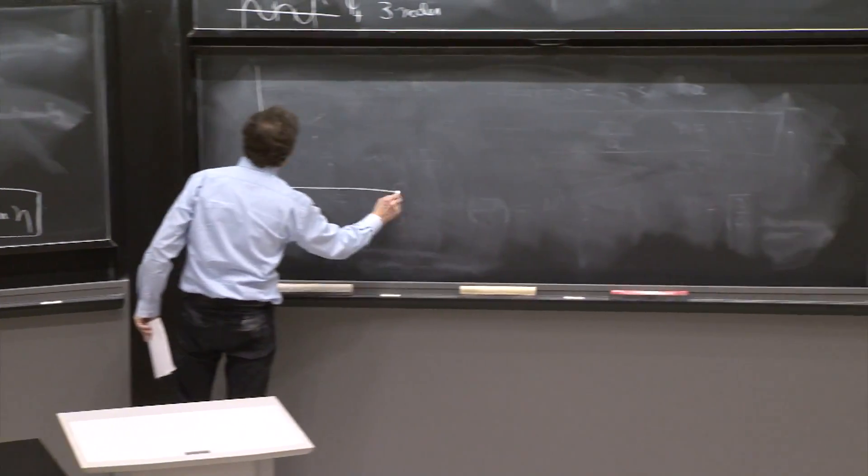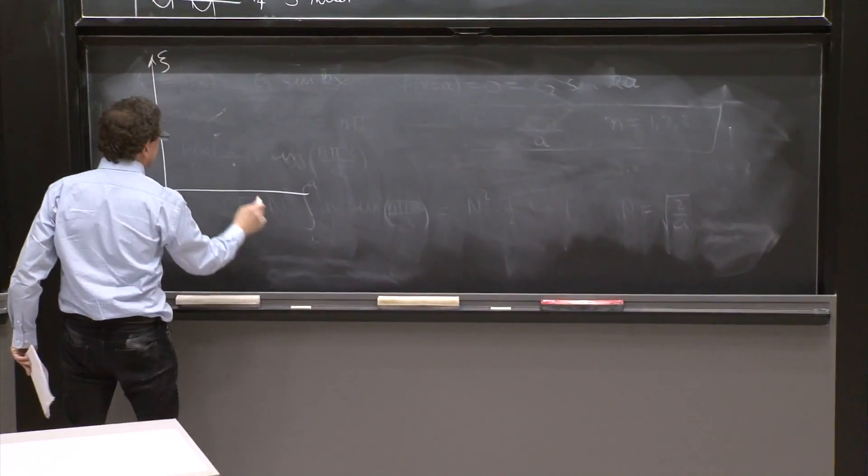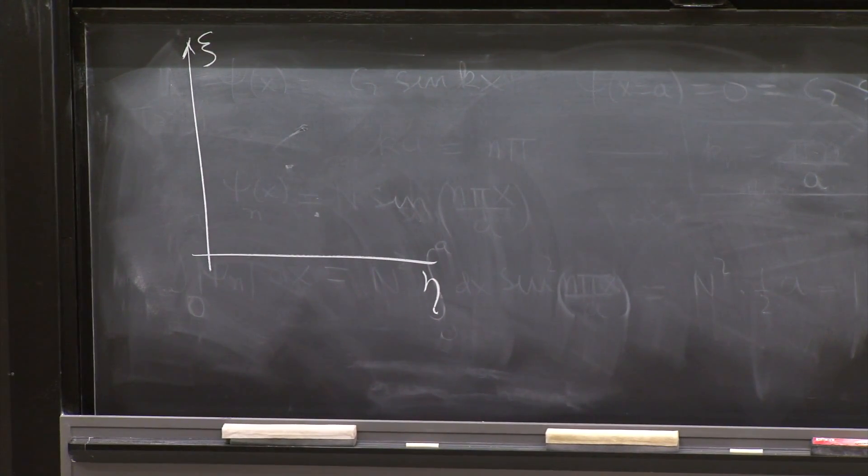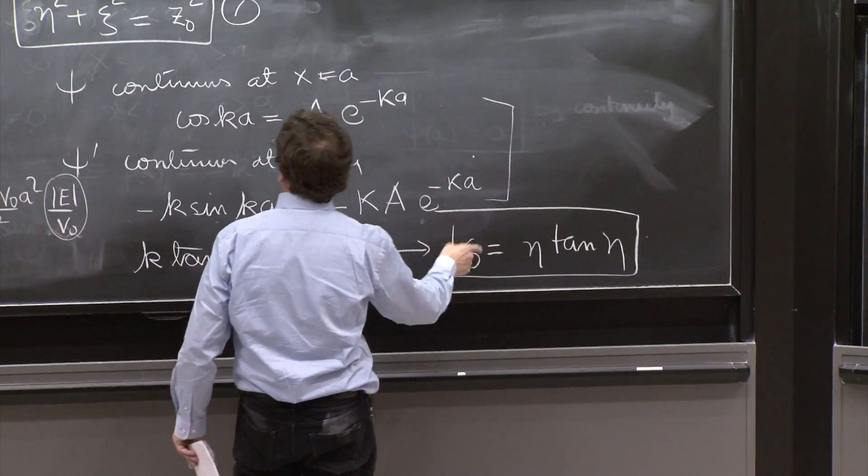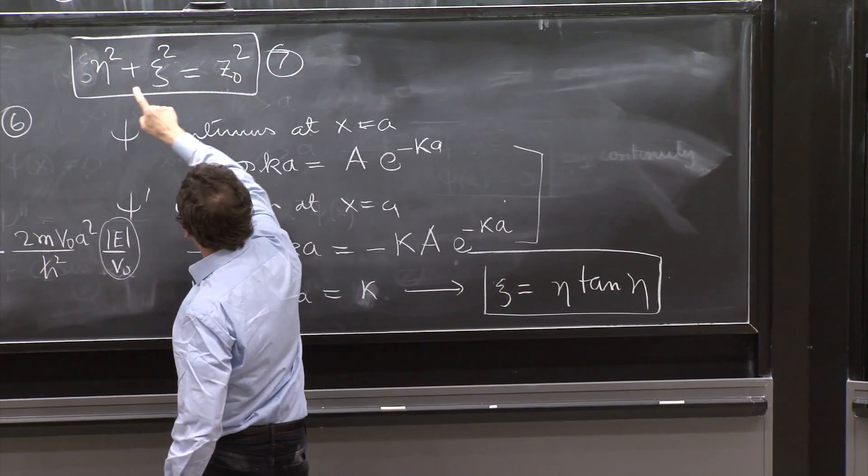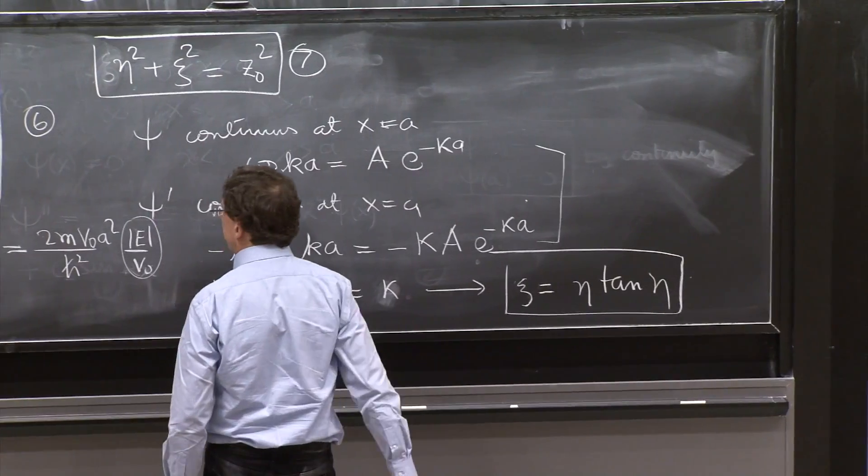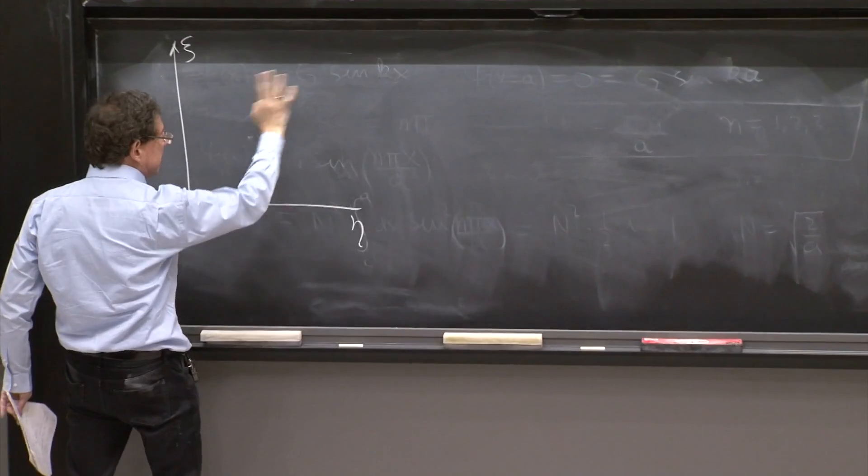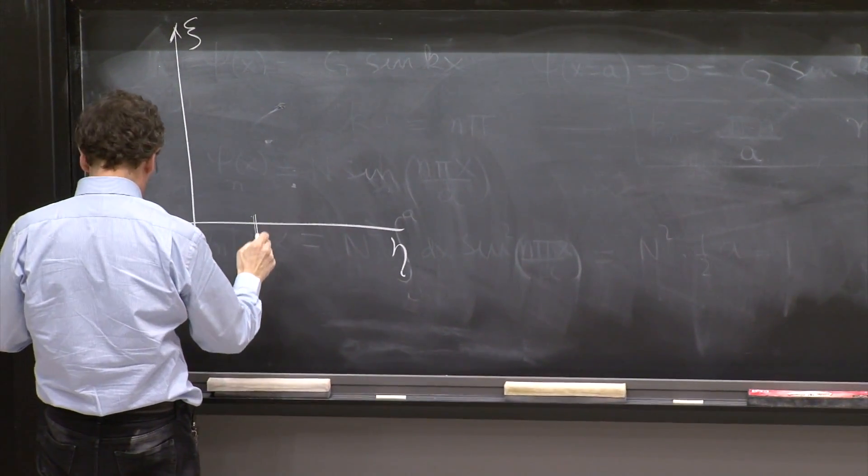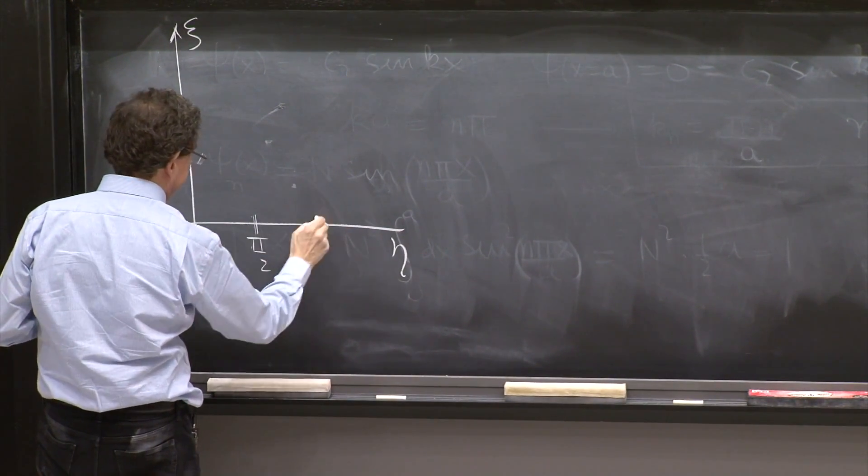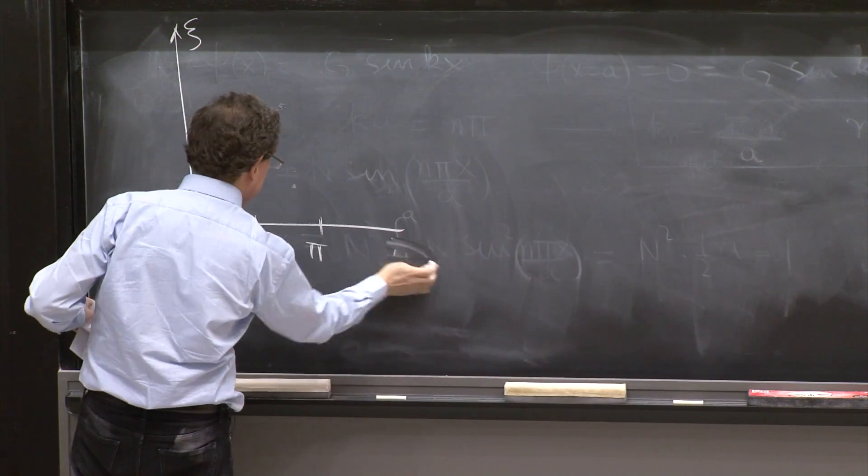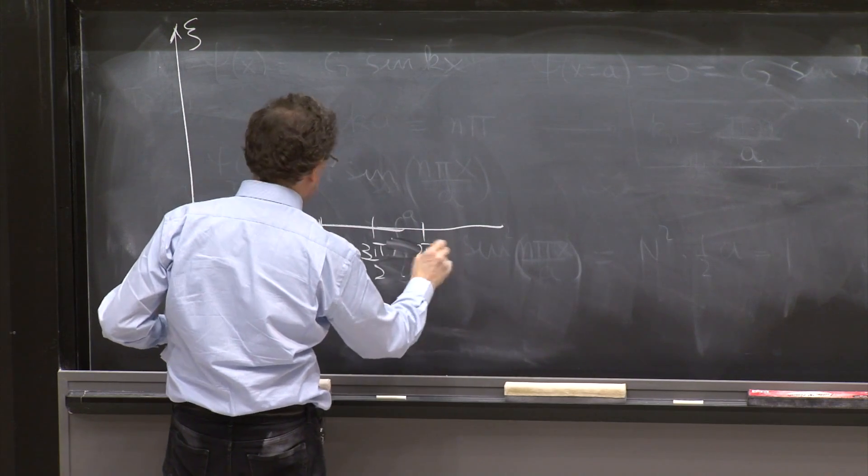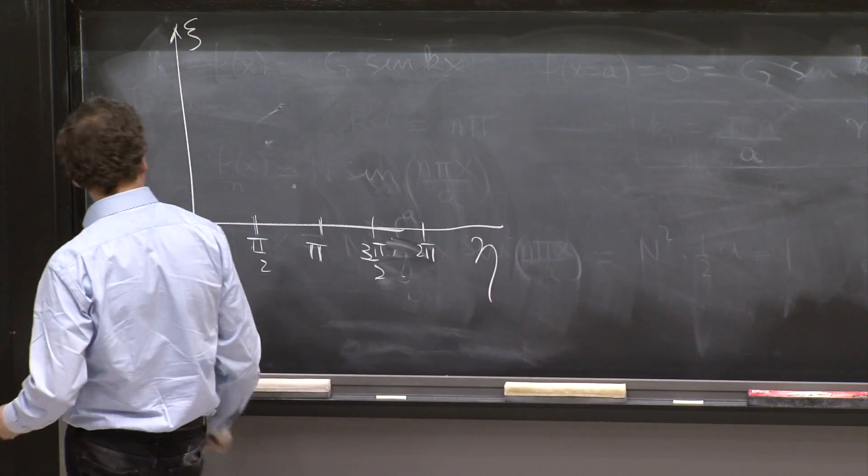We have psi eta. And then we say, oh, let's try to plot the two equations. Well, this is a circle, eta squared plus psi squared. Now, psi and eta must be positive. So we look at solutions just in this quadrant. Let's put here pi over 2, pi, 3 pi over 2, 2 pi. And here is eta, and there is psi.